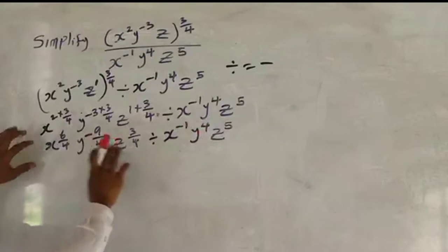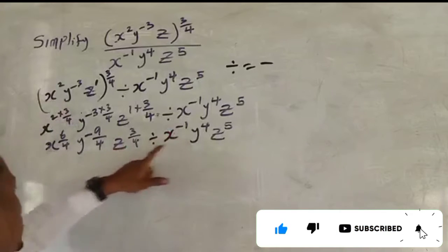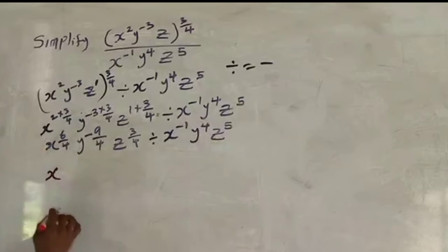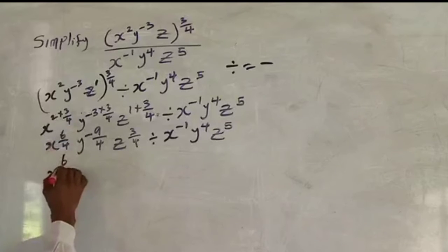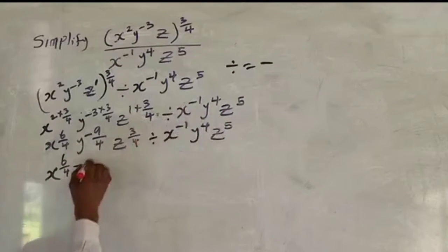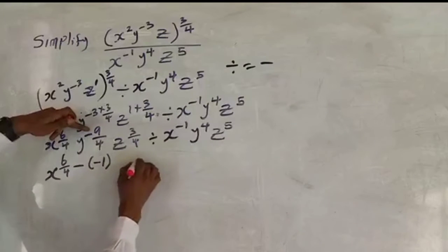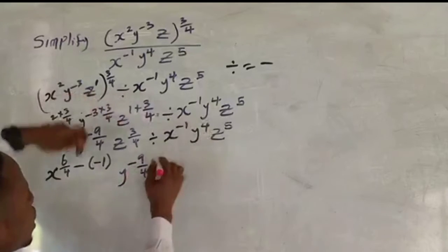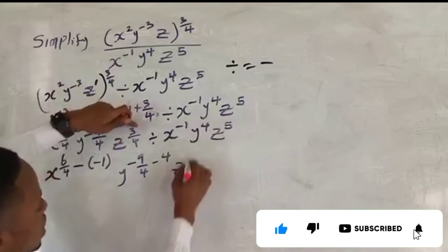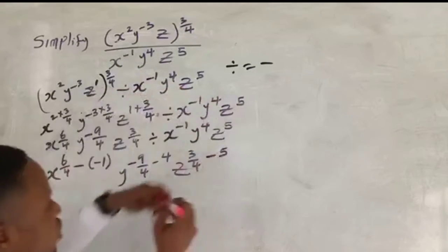Now because we have division, we subtract the exponents. For s: the first index is 6 over 4, minus the second index which is minus 1, giving s raised to 6 over 4 minus (minus 1). For y: the first index is minus 9 over 4, minus the second index which is 4, giving y raised to minus 9 over 4 minus 4. For z: the first index is 3 over 4, minus the second index which is 5.